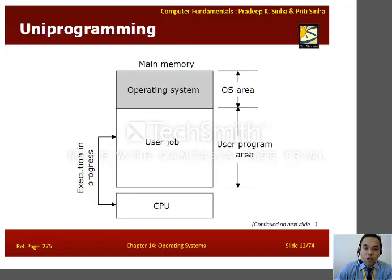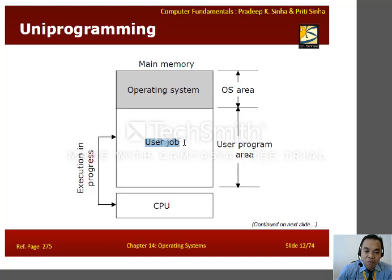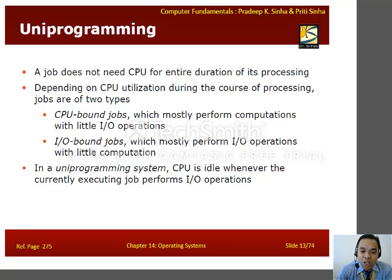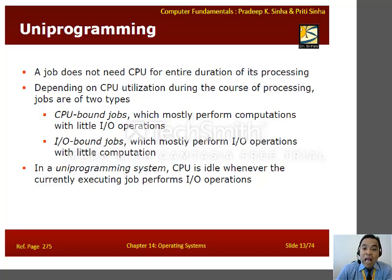We have the term uniprogramming — 'uni' meaning one. In main memory, one part is occupied by the operating system and another part by the user job and CPU. In uniprogramming, a job does not need the CPU for the entire duration of its processing. Depending on CPU utilization, jobs are of two types: CPU-bound jobs, which mostly perform computations with little I/O operations, and I/O-bound jobs, which mostly perform input/output operations with little computation. In a uniprogramming system, the CPU becomes idle whenever the currently executing job performs I/O operations.